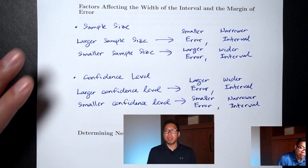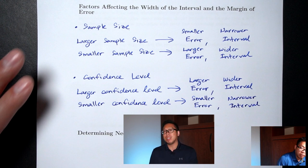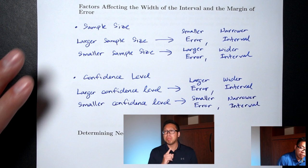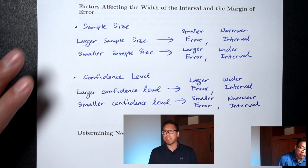The confidence level measures how likely we are to catch the true population proportion — we want high confidence. In practice, you'll see 95%, 99%, or sometimes 90%. But a higher confidence level gives a larger error. To compensate, use a larger sample size, which reduces the error.